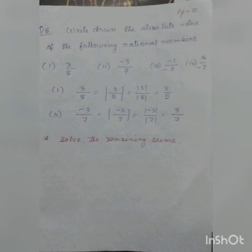Absolute value of minus 3 by 7 means absolute value of 3 divided by absolute value of 7. Absolute value of minus 3 is 3, absolute value of 7 is 7. So absolute value of minus 3 by 7 is 3 by 7. And you have to solve the remaining for yourself.